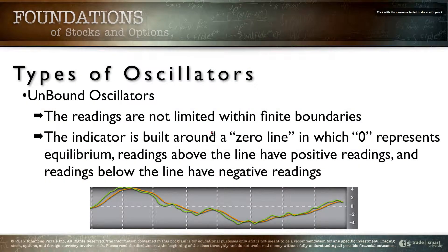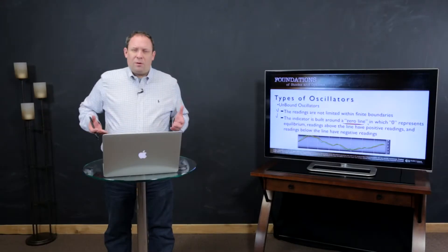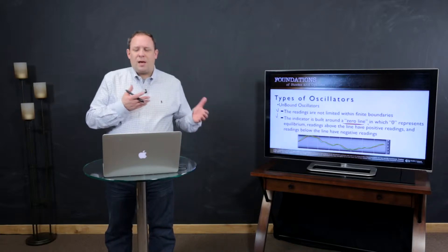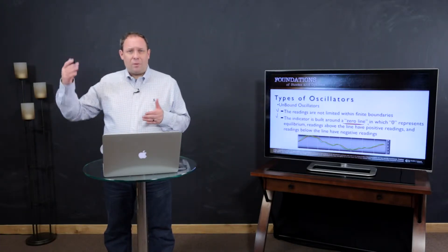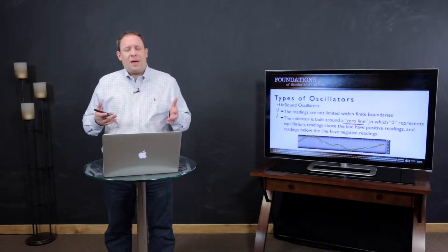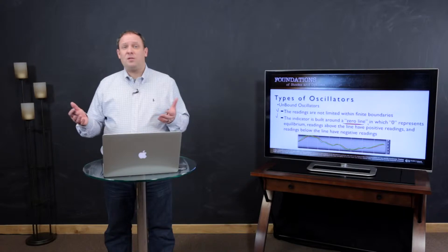Now let's look at the unbound oscillator. The difference is that readings are not limited within finite boundaries — they have infinite high and infinite low readings, and they center around what we call a zero line. The zero line represents equilibrium: above the line you're more on the bullish side, below the line you're more on the bearish side.